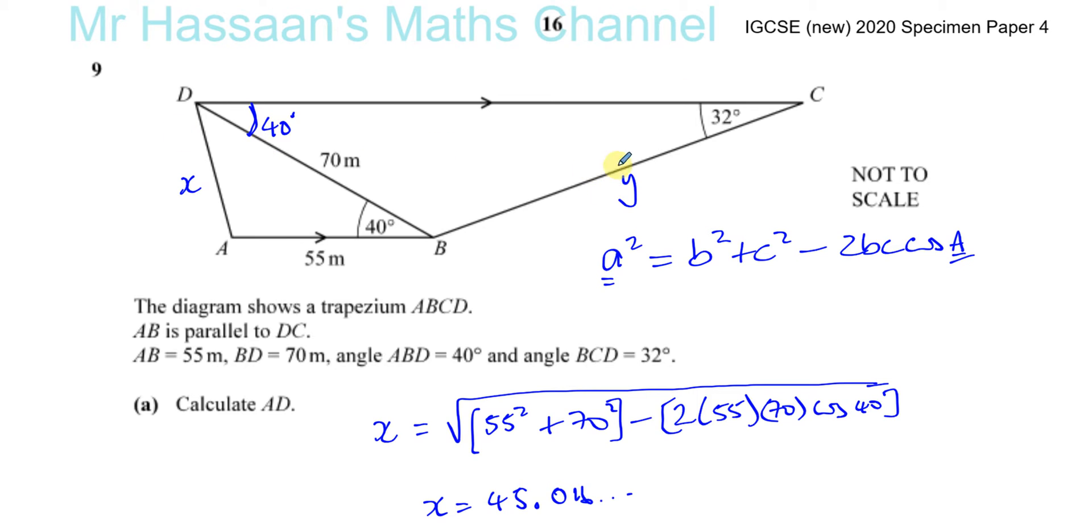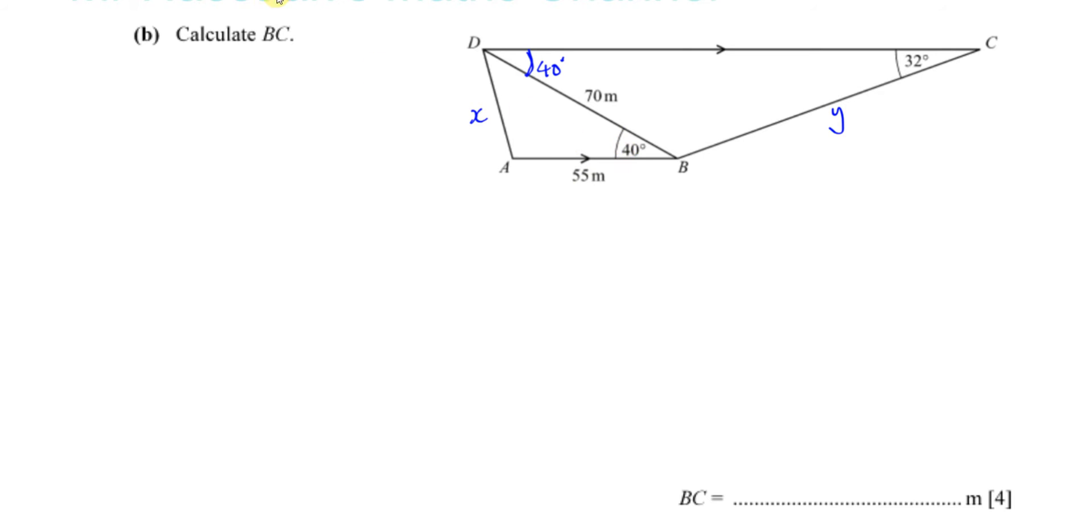Now we have the information we need to continue and find the angle Y. So now I've brought this diagram down so we can see what's happening. We're trying to find BC. Now we have this triangle here where we have pairs of opposites. So I can say Y over sine 40.